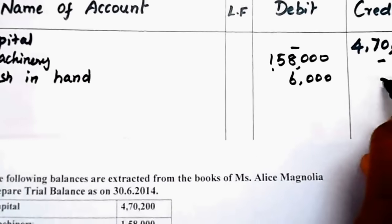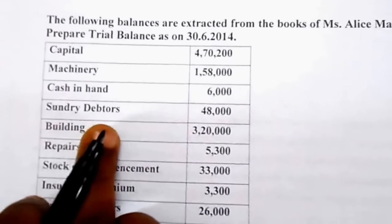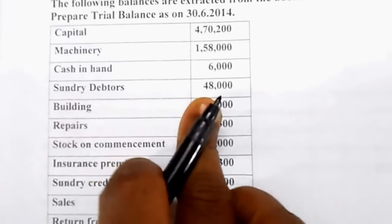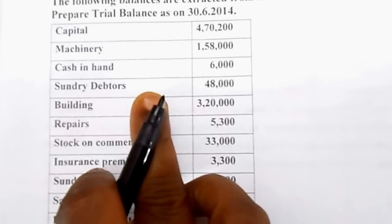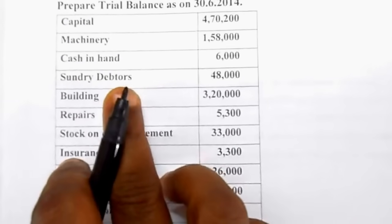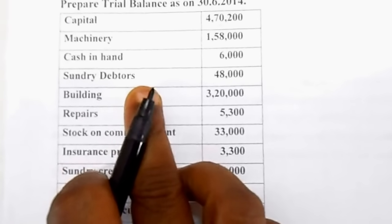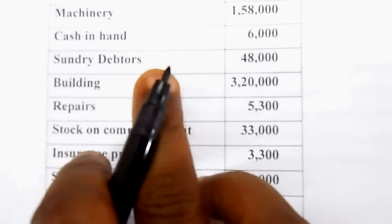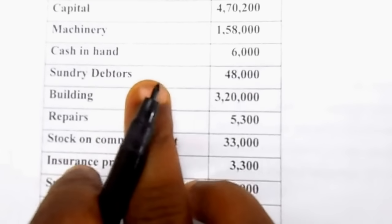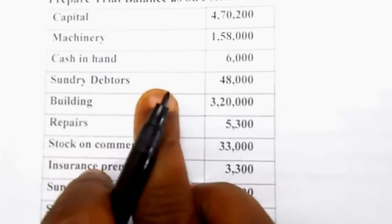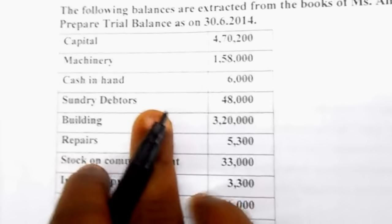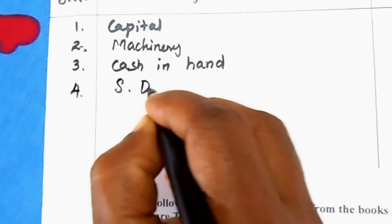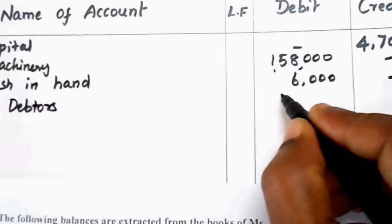Next: sundry debtors — 48,000. Sundry debtors are the group of customers who received items from the business without paying immediately. They are a personal account; personal account rule is debit the receiver. Debtors received benefit from the company, so enter sundry debtors 48,000 on the debit side.